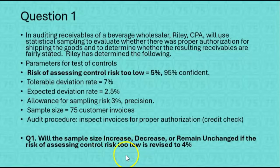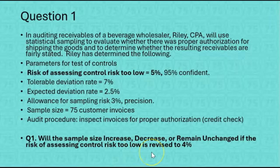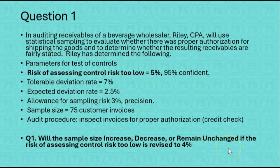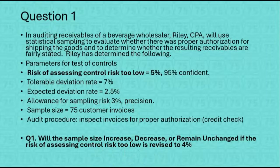Question one wants to know: will the sample size increase, decrease, or remain unchanged at 75 customer invoices if the risk of assessing control risk too low is revised to 4%? Right now it's 5%, and at 5% we're 95% confident. If we revise this risk down to 4%, that means we want to be 96% confident. The more confident we want to be, the larger the sample size has to be. So the answer is: sample size would have to increase if we revise the risk from 5% down to 4%.